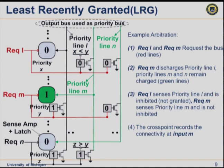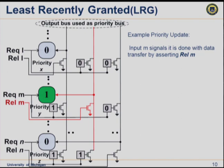Each sense amplifier then senses those bit lines. Request L senses the first bit line, which was discharged, and stores a zero. Request M senses its line — since nobody inhibited it, no one with higher priority was requesting — it's granted that particular output. It switches to data transmission mode and transmits data. Once transmission is complete, it asserts a release signal, in this case release M, which updates the priority vectors to indicate where least recently granted priority has changed.